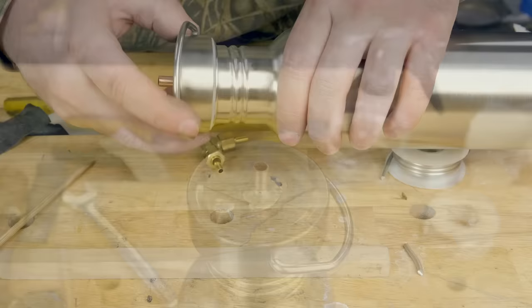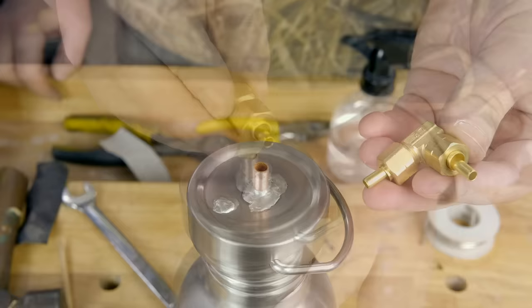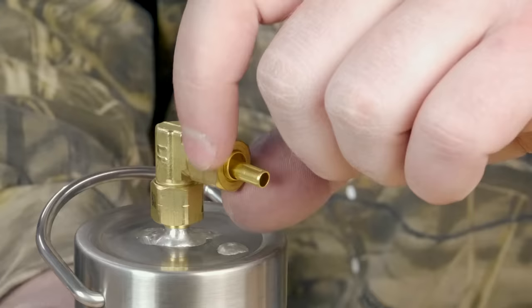The short section of copper sticking out of the top will connect to a longer piece of tubing using a right angle compression fitting, which can be pressed into the lid and tightened down to lock it.